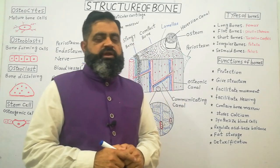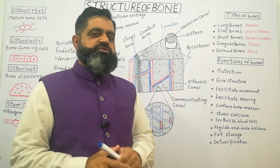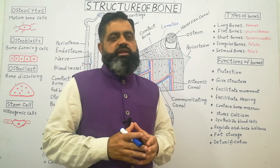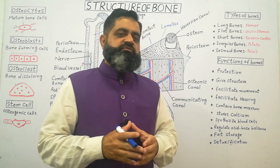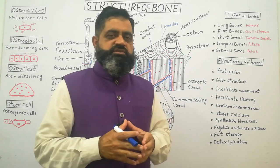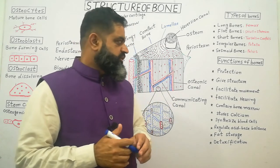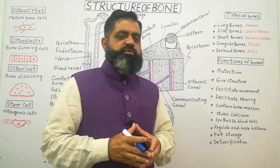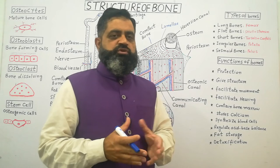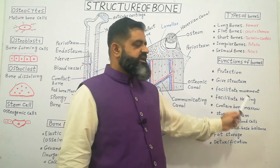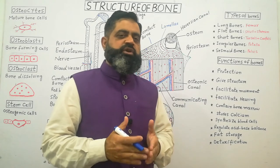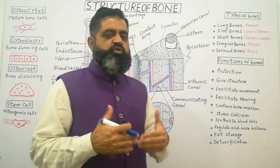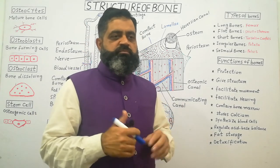Bones have many important functions. The first function is protection: the skull and cranium protect the brain, and the rib cage protects the heart, lungs, and internal organs. Bones also give structure and shape to the body through the endoskeleton. Additionally, bones facilitate movement — with the help of bones we can locomote, sit, work, and perform daily activities; without bones the body would simply be a heap of soft tissue.